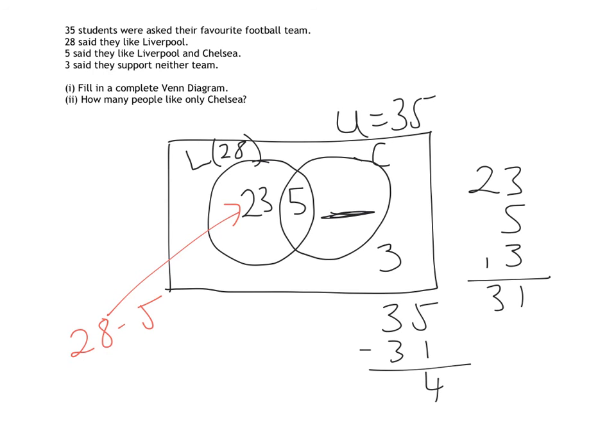So therefore, the answer must be that 4 people like Chelsea only. If you want to double-check, you can obviously add all those numbers together, and they should give you the answer of 35. And again, part 2 can be easily answered from our Venn diagram. It said, how many people like only Chelsea? The answer is 4.